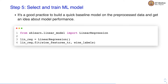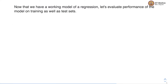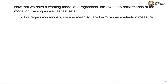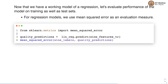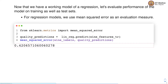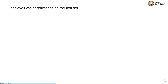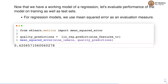In the case of wine quality prediction, since the quality is a number we can use a linear regression model as a quick baseline. Once we train the regression model we can evaluate its performance on both the training and test sets using mean squared error as an evaluation measure. On the training set we obtain a mean squared error of 0.42.